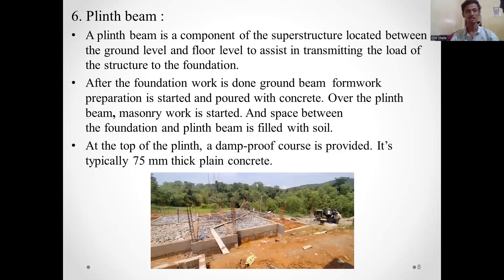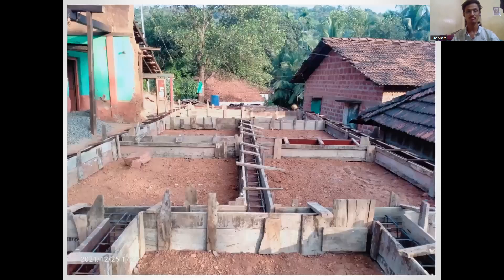A plinth beam is a component of the superstructure located between the ground level and floor level to assist in transmitting the load of the structure to the foundation. After the foundation work is done, the formwork of the beam is prepared and poured with concrete. At the top of the plinth beam, a damp-proof portion is provided to restrict the entry of moisture into the structure. This is the formwork of the plinth beam, inside which the reinforcement is placed as seen in the picture.